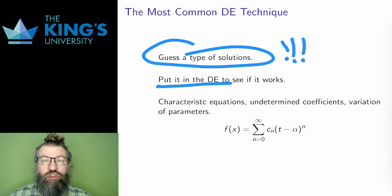The guess needs to be a bit general, so it will have unknown parameters or even unknown functions in it. Putting it in the DE is a way to figure out what these parameters and functions are, thus determining the solution.